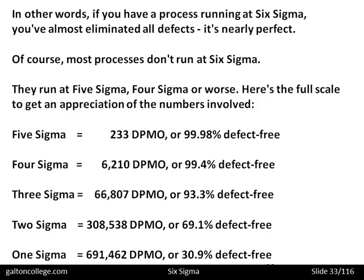Most companies will not be running at 6 sigma — they may be running at 5 or 4 sigma or even less. But if they have policies and processes in place to try and eliminate the number of defective items produced, then they are moving towards 6 sigma. Six sigma is just 3.4 defects per million opportunities. Starting at 5 sigma you can see it's 233, so 6 sigma is a big ask — a very demanding policy.